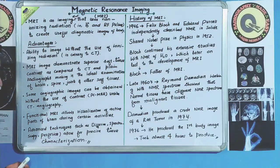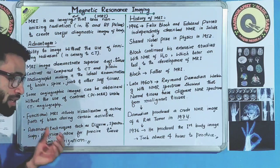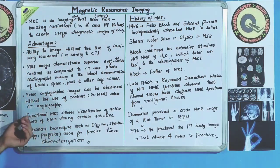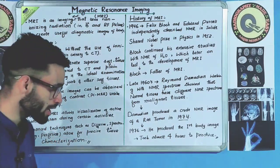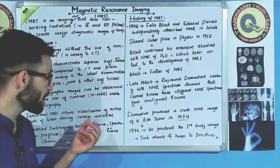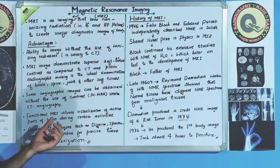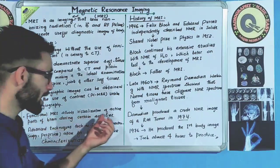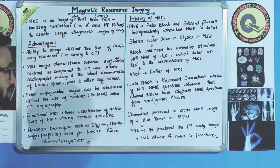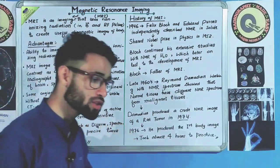Another advantage is that MRI allows visualization of active parts of the brain during certain activities. We have a type of MRI called functional MRI, which allows visualization of active parts of the brain during certain activities.